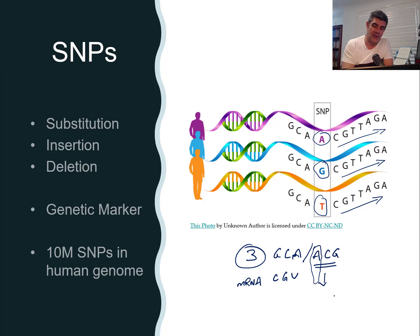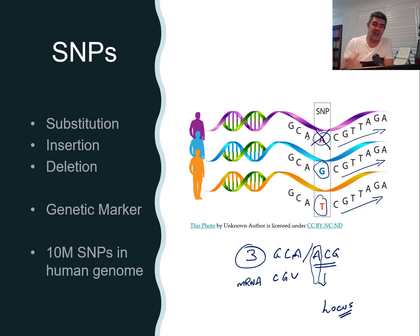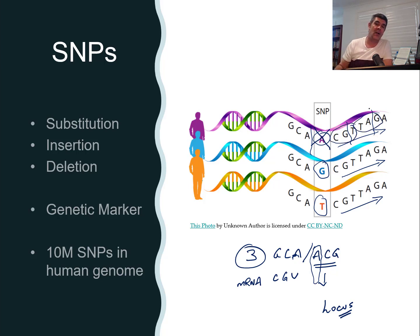Substitution is just one type of SNP — a change at a single base point, often called the locus. If the A nucleotide were completely removed, that would be a deletion. This actually shifts the whole reading frame: if you're reading in triplets and you remove one base, all subsequent triplets from that point change. So there's going to be quite a significant change in the expression of a gene with a deletion.